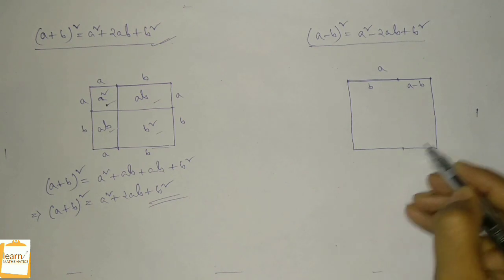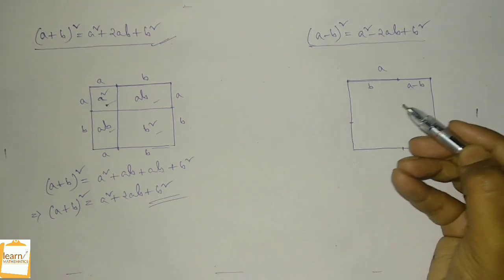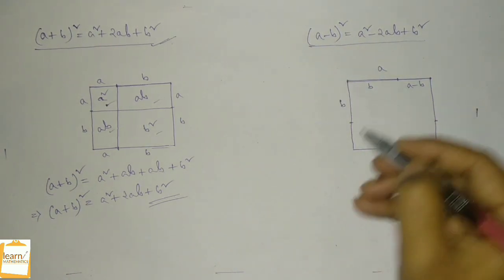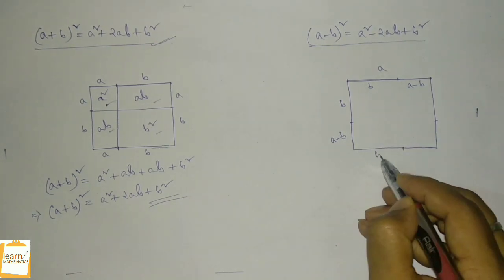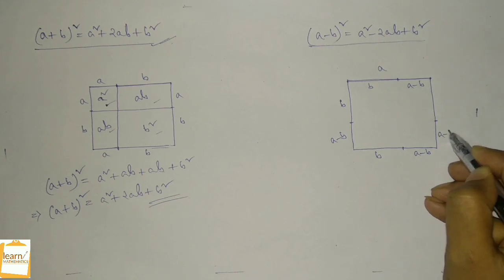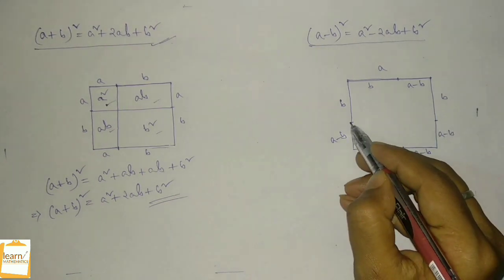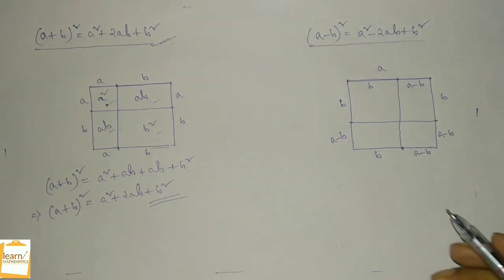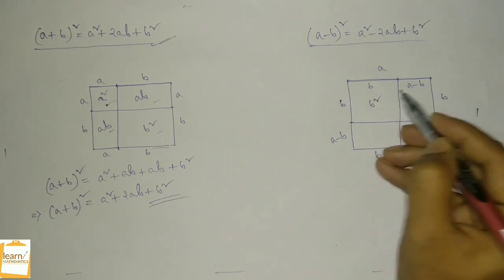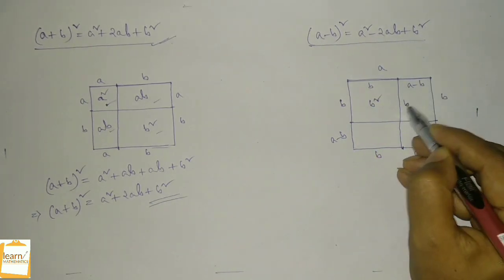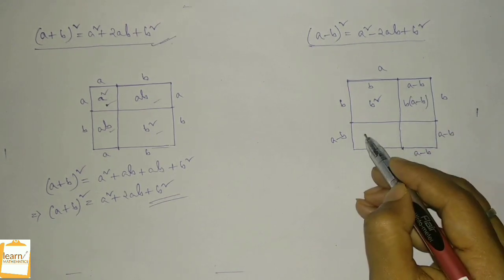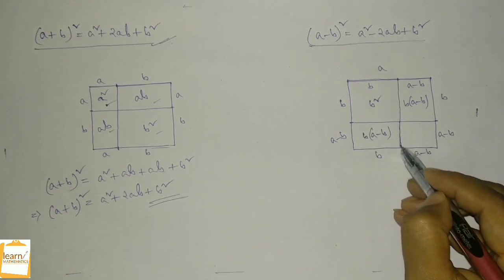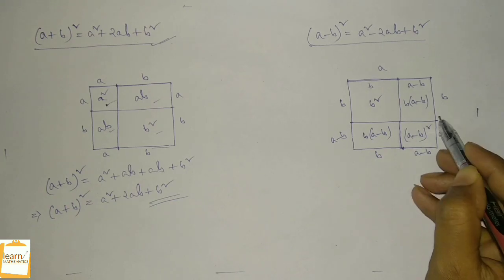Similarly the point is here, here, and here, dividing each side. The length of this portion is b and this portion is a minus b. This portion is b, this portion is a minus b, and here a minus b and b. Now let me join these two points and these two points. The area of this square is b squared, the area of this rectangle is b times a minus b, and the area of this rectangle is also b times a minus b. The area of this square is a minus b whole square.